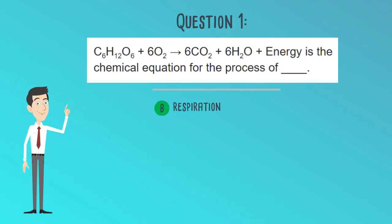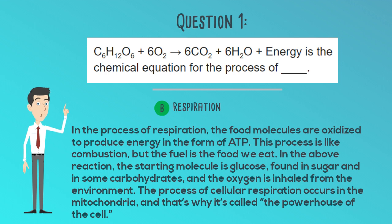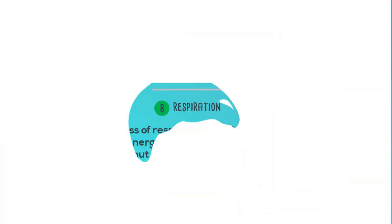The answer is B. Respiration. In the process of respiration, the food molecules are oxidized to produce energy in the form of ATP. This process is like combustion, but the fuel is the food we eat. In the above reaction, the starting molecule is glucose, found in sugar and in some carbohydrates, and the oxygen is inhaled from the environment. The process of cellular respiration occurs in the mitochondria, and that's why it's called the powerhouse of the cell.